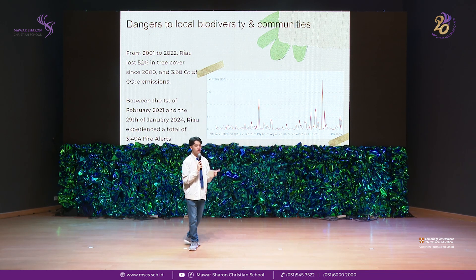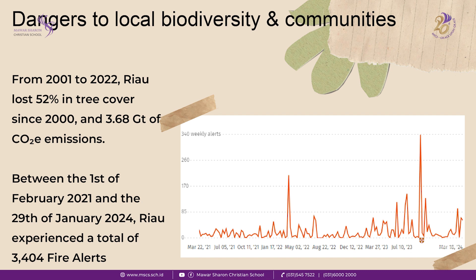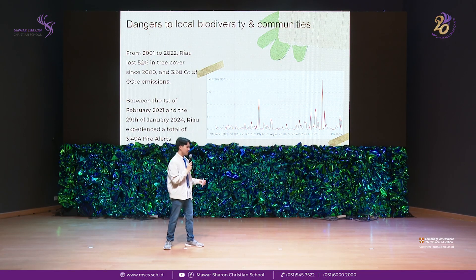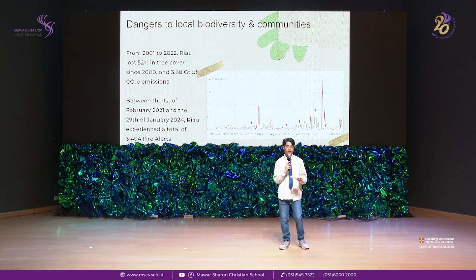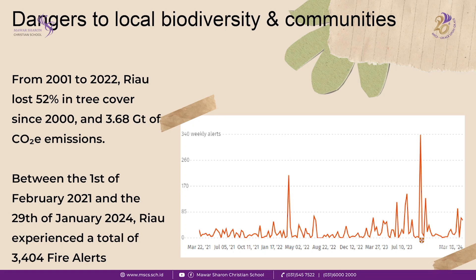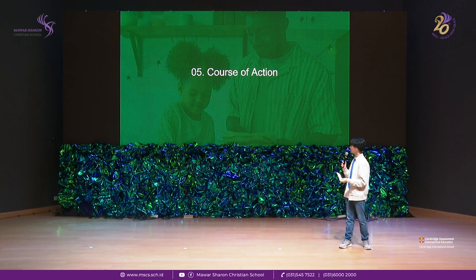The third consequence is danger to local biodiversity and communities. From this graph, between February 1st 2021 and February 24th of this year, Riau experienced 3,404 fire loads. Can you imagine waking up every day to one, two, or ten fire loads? That would negatively impact community well-being. Additionally, from 2001 to 2022, Riau lost the equivalent of 52% of its forests — a massive loss that has definitely negatively impacted local biodiversity.